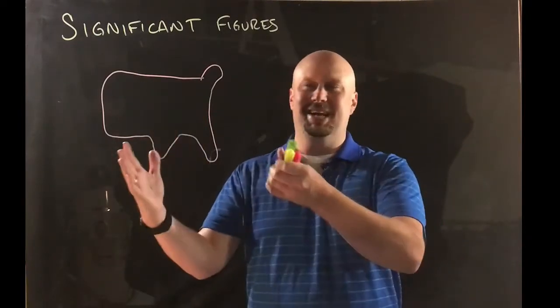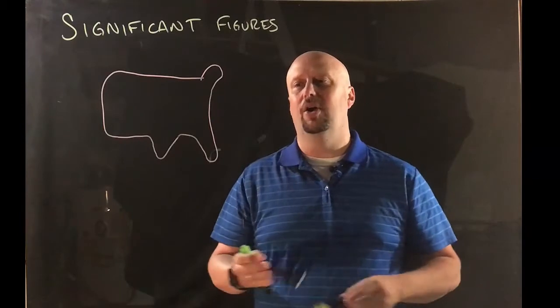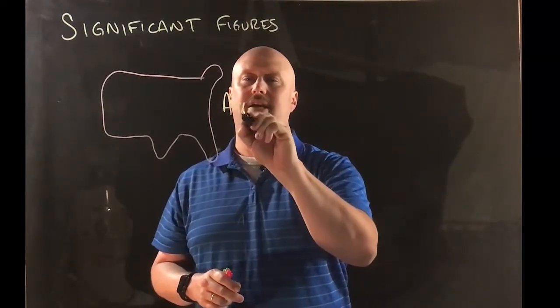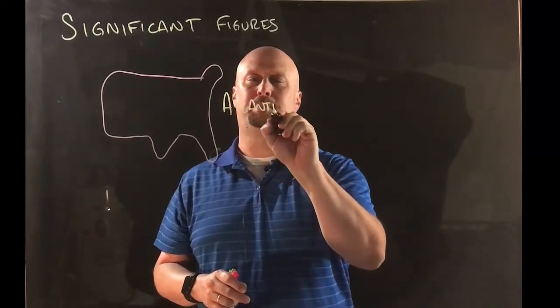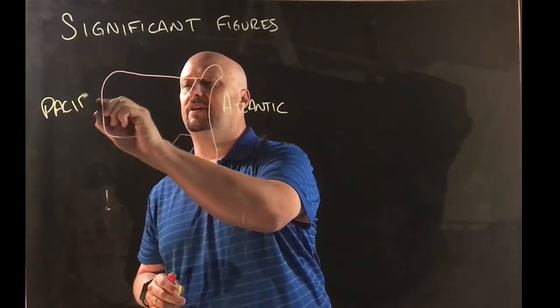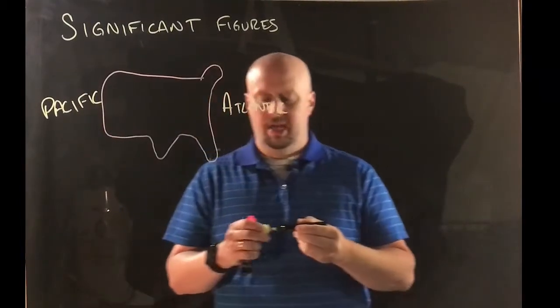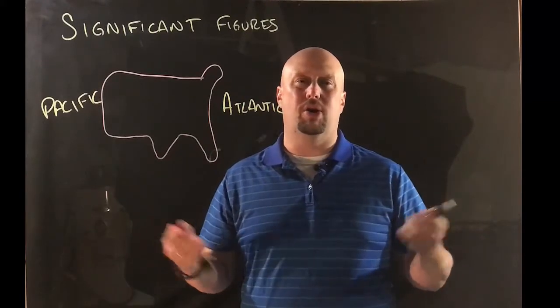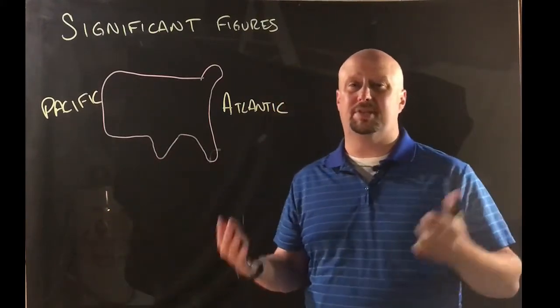So this is the United States and as we know there's an ocean on each side. On one side of the United States is the Atlantic and on the other side is the Pacific. So we could call this model the ocean model or most of the time it's just called the Atlantic Pacific model.